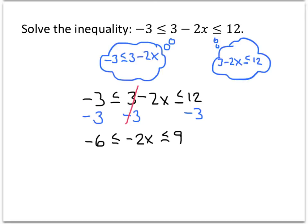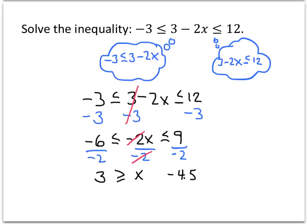Now we're ready to divide everything by negative 2. Minus 6 divided by negative 2 is positive 3. Minus 2x divided by negative 2 — those negative 2s divide out and we just get x. Then 9 divided by negative 2 gives us negative 4.5. But because we divided by a negative number, we have to reverse the direction of the inequalities. So now we have 3 greater than or equal to x greater than or equal to negative 4.5.